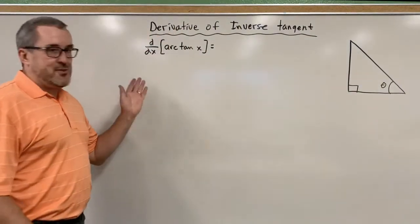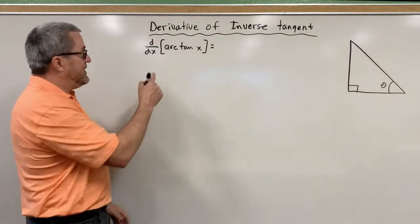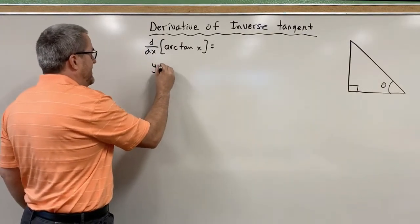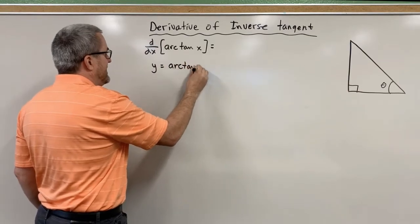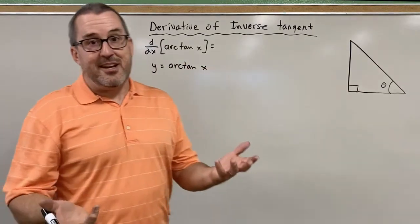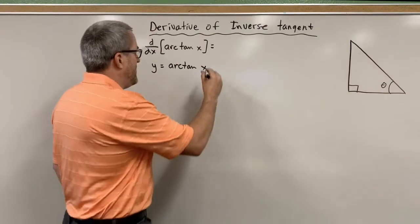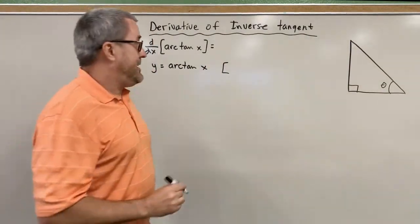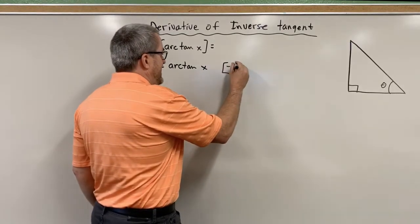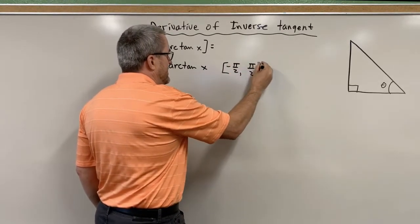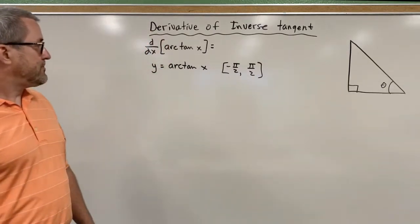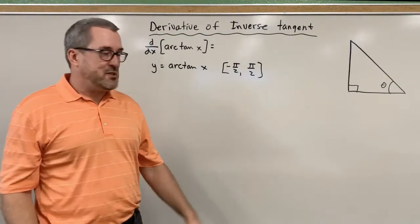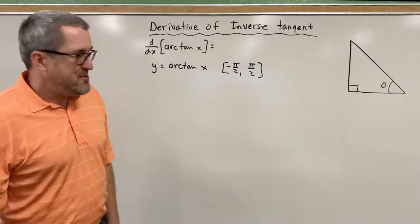To find the derivative of the inverse tangent function, we're going to start with the function y equals the arc tangent of x. If you've studied some inverse trig functions before, you might know that this function has to have a restricted domain to make sure that it is a function, and that restricted domain is between negative pi over two and pi over two. That's not going to be a very important part of this process, but just for mathematical precision, I wanted to include that restricted domain.